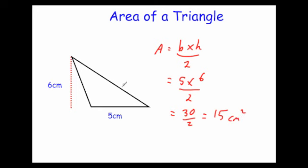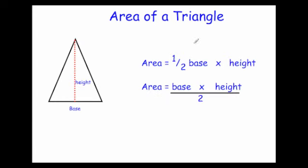To find the area of a triangle, you do half the base times the height, or base times height divided by 2. The units will be centimeters squared, meters squared, millimeters squared, and so on.